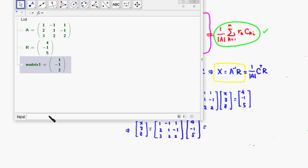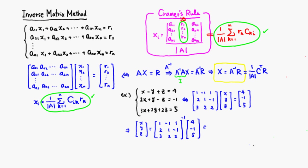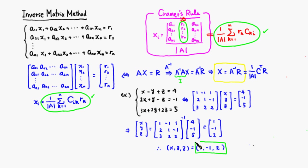The result is [1, −1, 2], which means x = 1, y = −1, z = 2. So the solution is (x, y, z) = (1, −1, 2). The inverse matrix method is essentially Cramer's rule done in one shot, whereas Cramer's rule works component by component. That's it — hope that was clear!